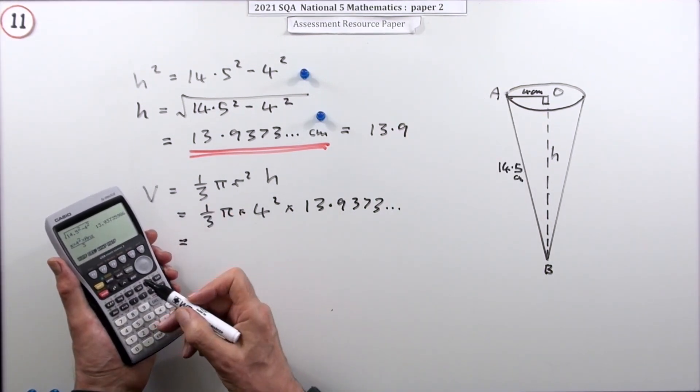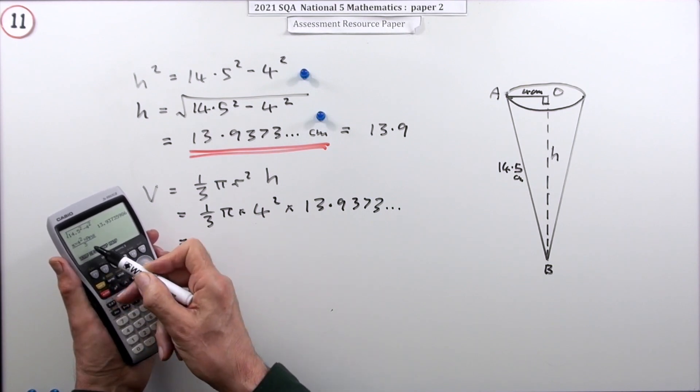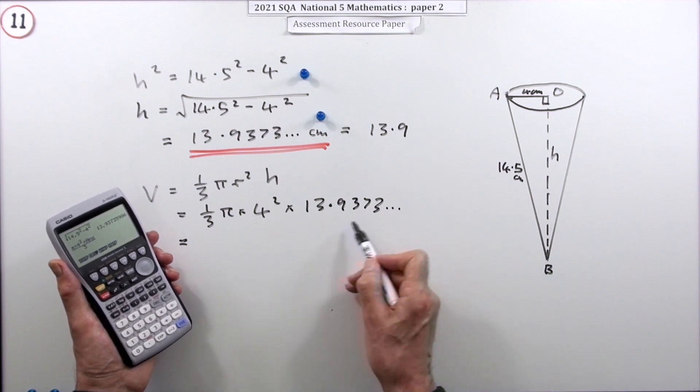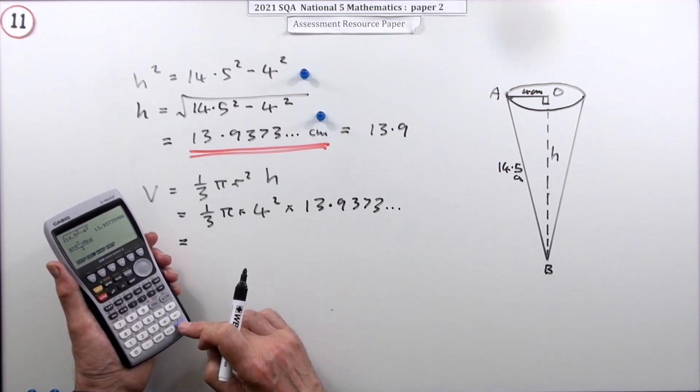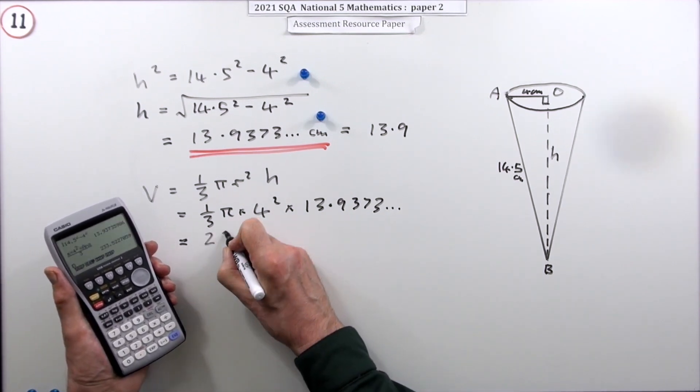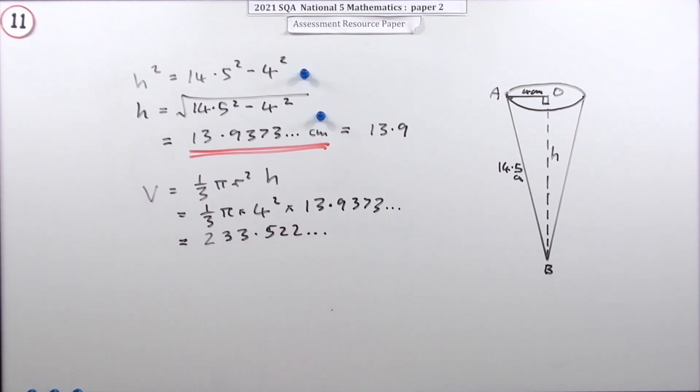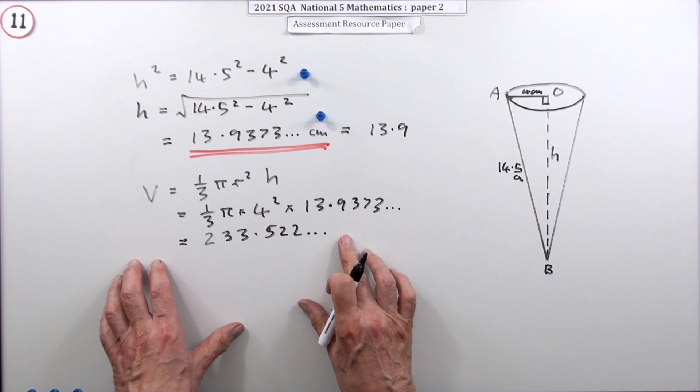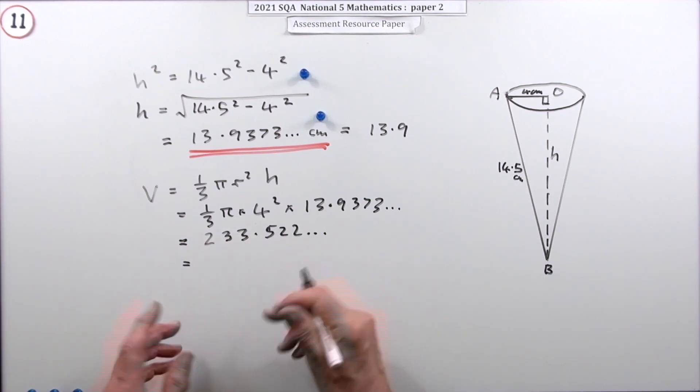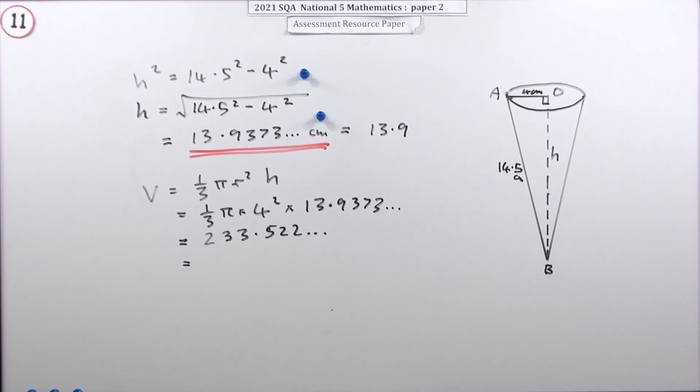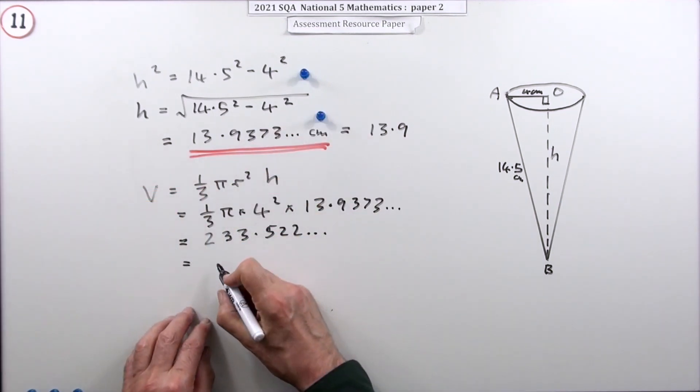So there's the calculation: the third underneath π, radius squared 4, answer—because that's still stored there. When I press the button I get 233.522 and so on, which is completely accurate, but it only wants it to two significant figures.